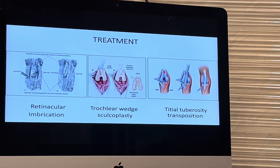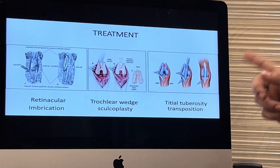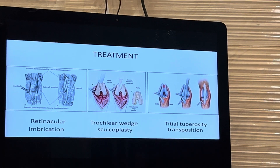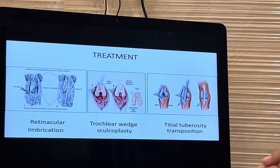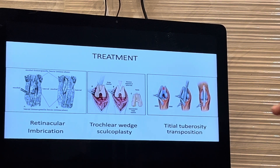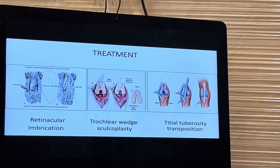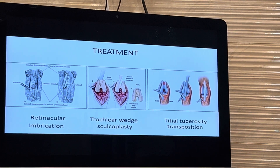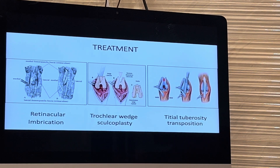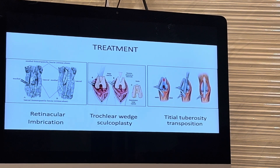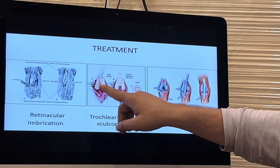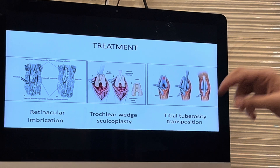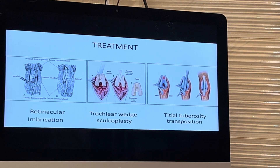The second treatment is trochlear wedge sulcoplasty. This is done when there is a deviation of the femur or a shallow trochlea. The trochlea is a pulley-like structure where the patella sits. Whenever it is not deep enough, luxation occurs. In that case, we deepen the groove using surgery called trochlear wedge sulcoplasty, where we perform a wedge sulcoplasty and reposition the patella back into position by deepening the groove.